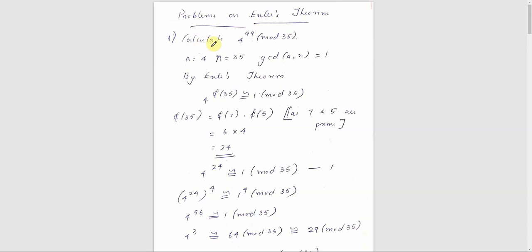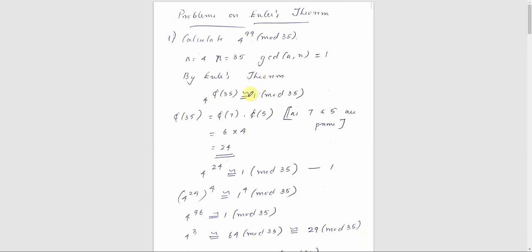First question: calculate 4 raised to 99 mod 35. Here a equals 4 and n equals 35. We check the GCD of a and n, which is 1. So we can apply Euler's theorem.